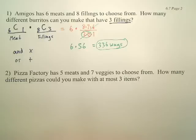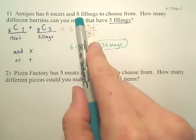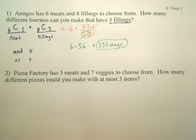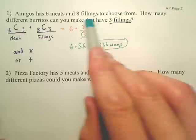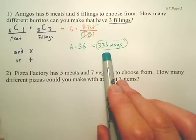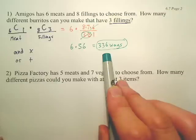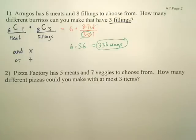Now, are there more than eight choices of fillings? Probably. Could you also add on sodas? Yes. But in this situation, with a choice of one meat and three fillings, you have 336 ways to make burritos. That's a lot — almost every day you could get a different burrito, every day for the whole year. Almost.